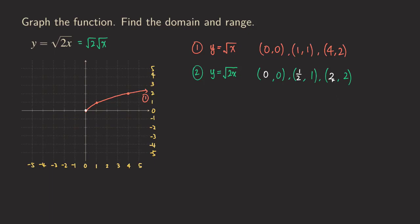Comparing these x-values with the original key points: zero stays zero, one becomes one-half, and four becomes two. The x-values are all being halved. Zero multiplied by half is still zero, so you don't see its effect there, but the other x-values are all halved — and that is what makes this a horizontal compression.